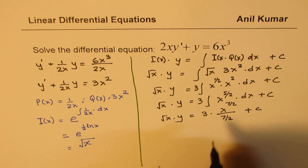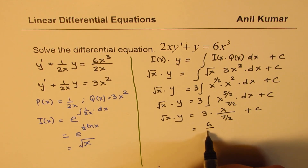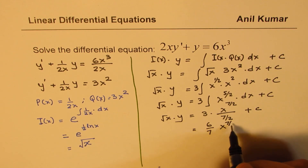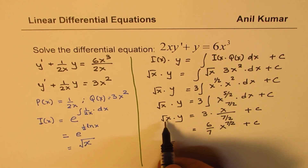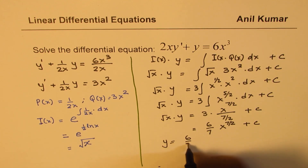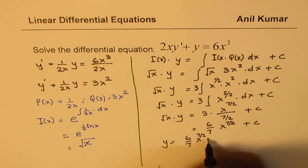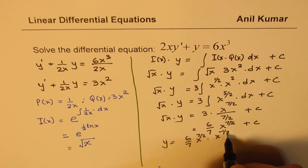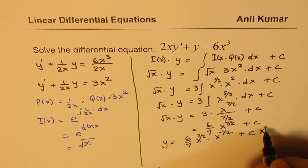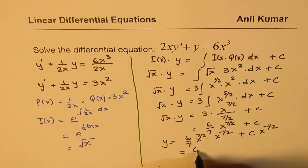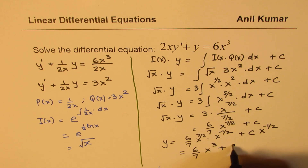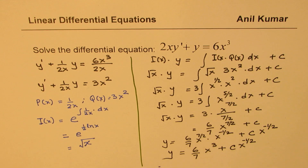So sqrt(x) times y equals 6/7 x to the power of 7/2 plus c. Dividing both sides by sqrt(x) gives y equals 6/7 times x to the power of 7/2 times x to the power of minus one-half plus c times x to the power of minus one-half. Simplifying the exponents: 7/2 minus 1/2 equals 3, so y equals 6/7 x cubed plus c times x to the power of minus one-half.